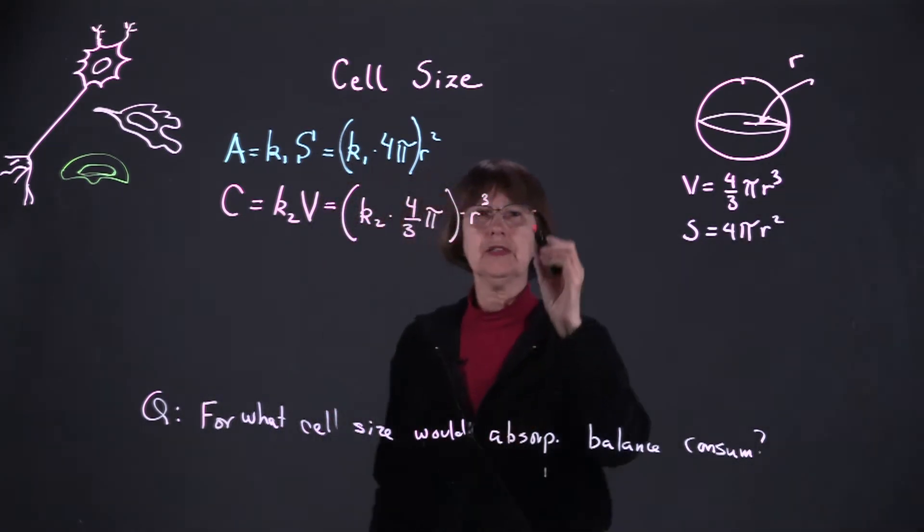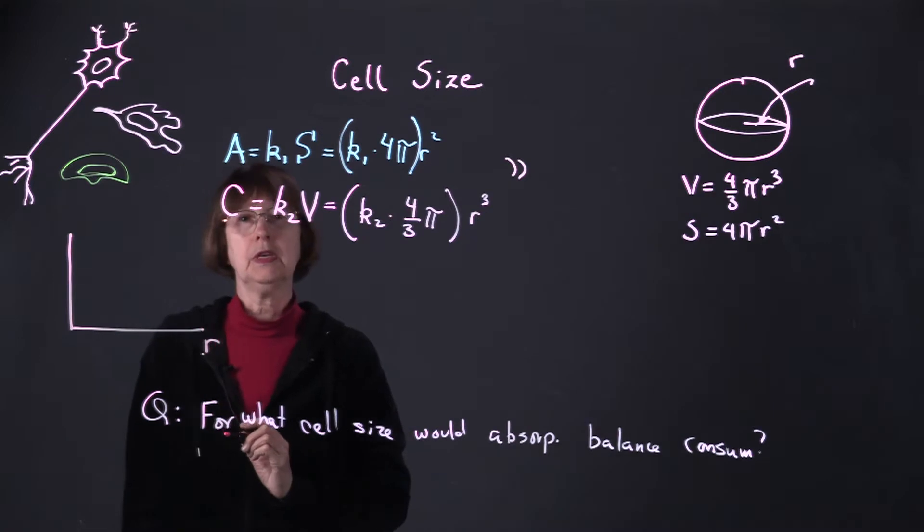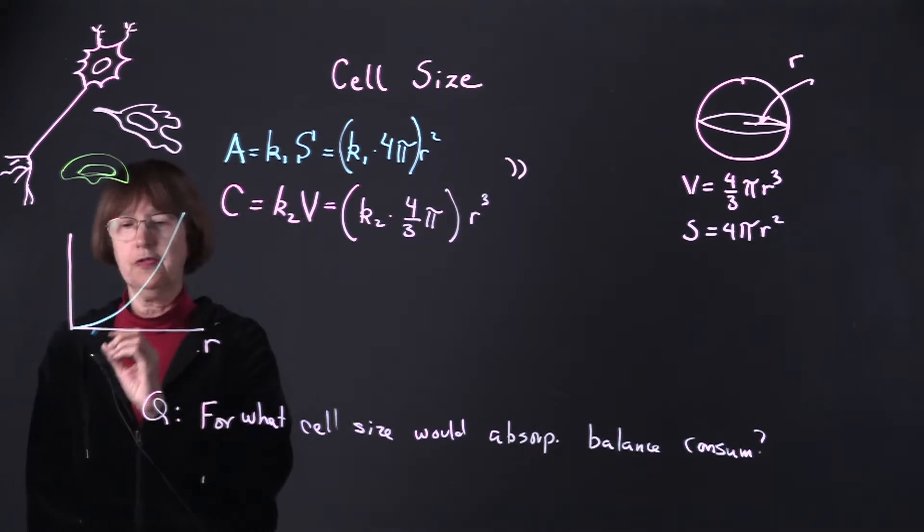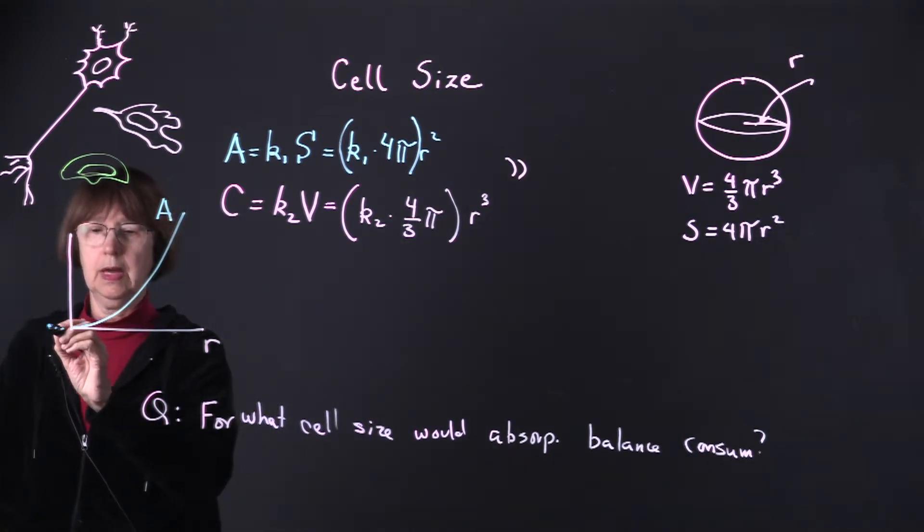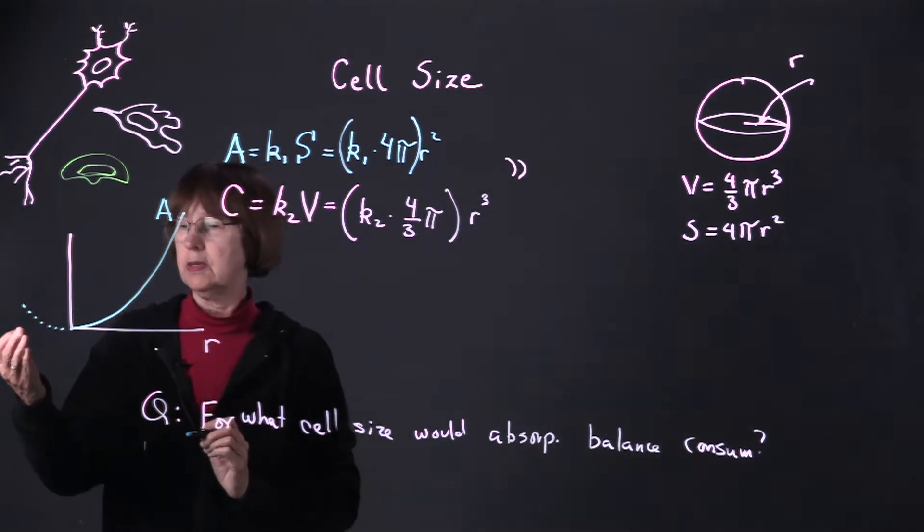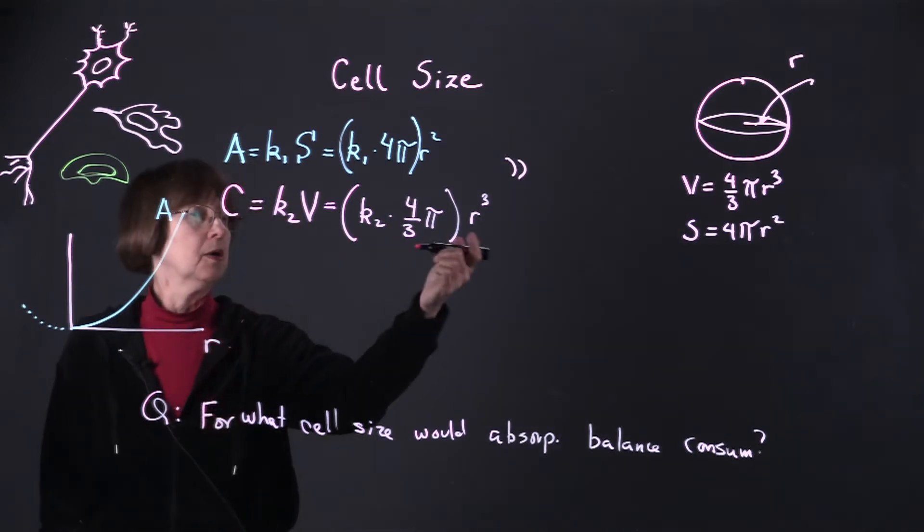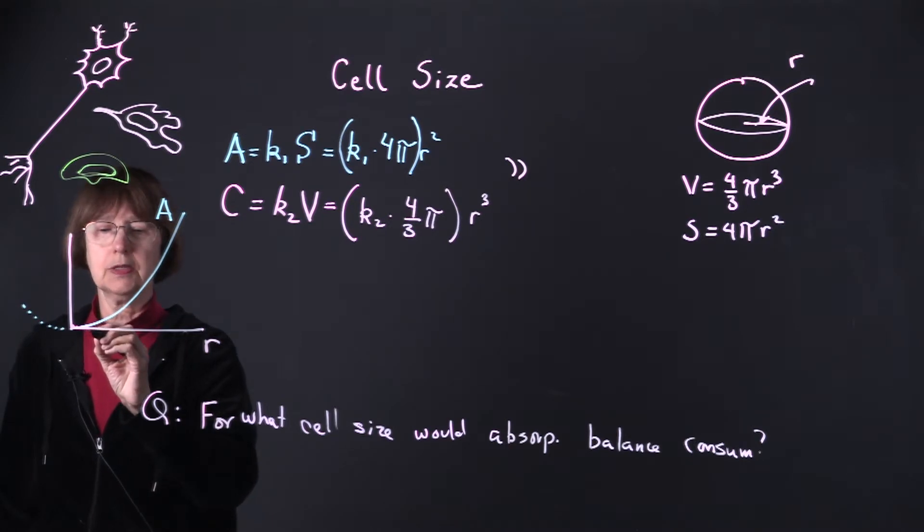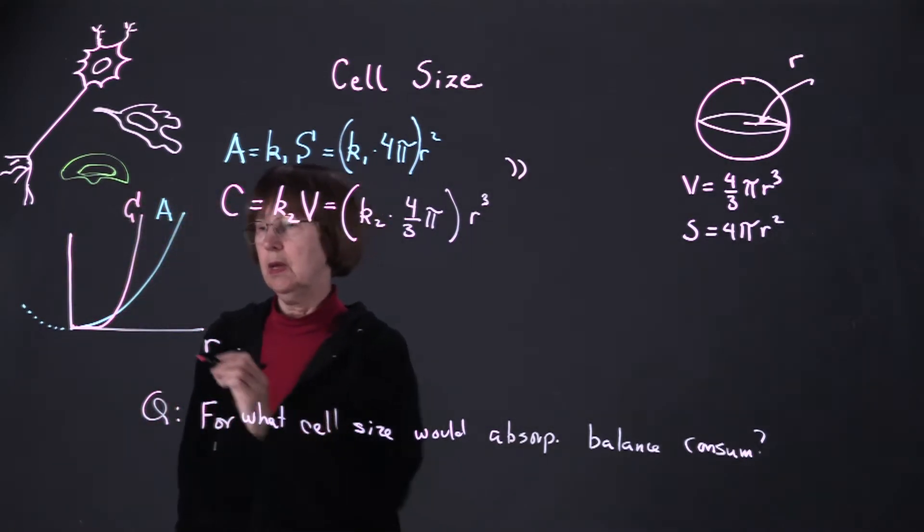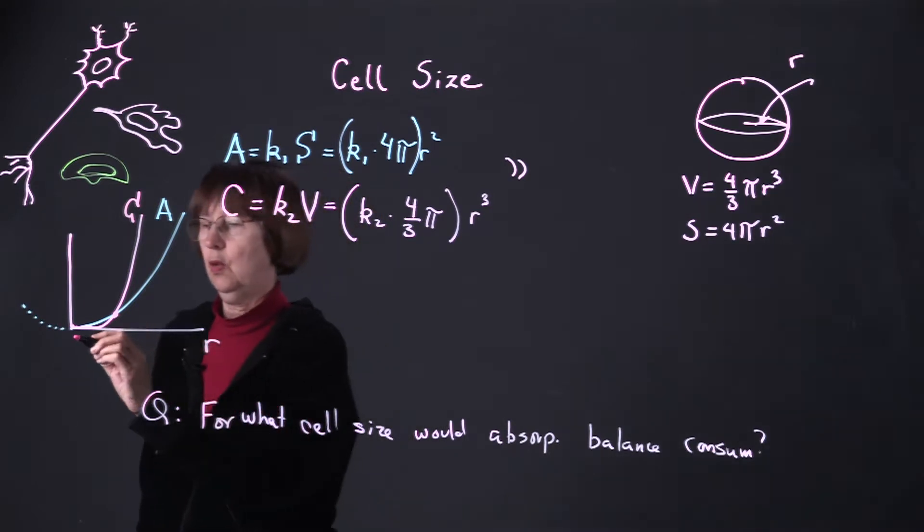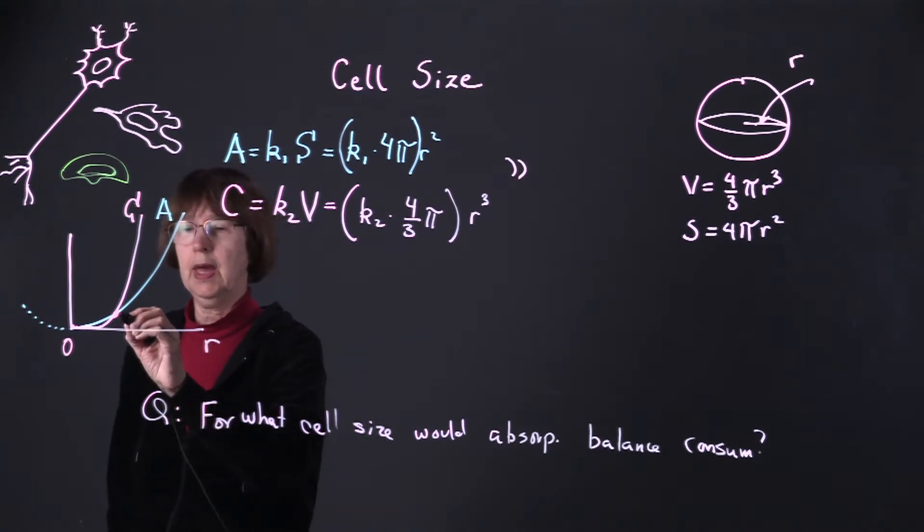In order to answer this question, we must equate these two things and solve for the radius r. Let's draw a picture of these two functions. Both of these are power functions. For instance, the absorption is something that looks like this. Now, of course, it has another branch in the negative quadrant, but this is not going to be very informative in this problem since cell radius must be positive. The consumption rate is a cubic. The property of a cubic is that it starts up flatter than a quadratic, and then it rises much more steeply. And so those two curves will cross in two places. One of those places will turn out to be zero, and the other place is what we're going to solve for and identify.